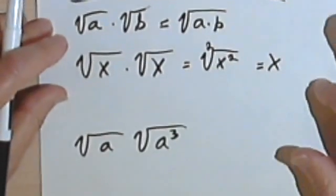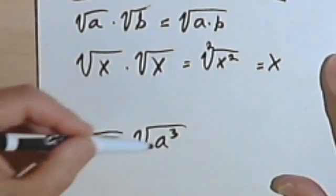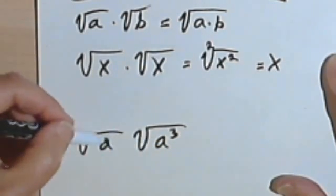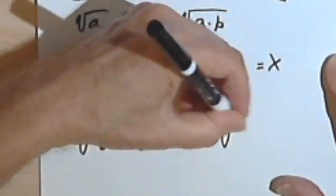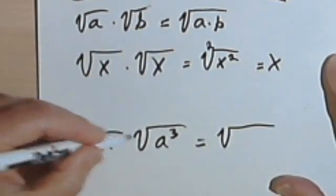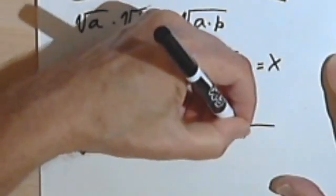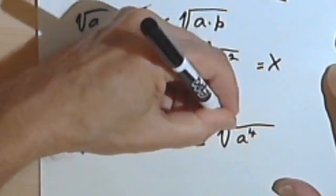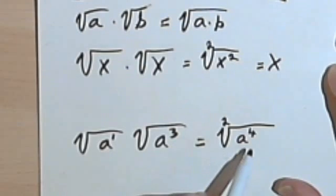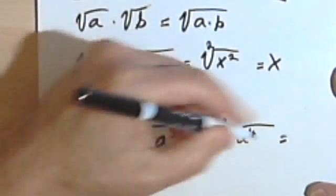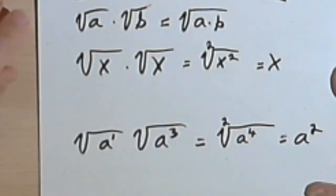Let's look at another problem. I've got the square root of a times the square root of a to the third, and I'm going to multiply these two square roots together. That gives me the square root of a times a to the third — basically adding their exponents — so that gives me a to the fourth. To simplify, I take the index, which is 2, divide it into the exponent under the radical sign, and that gives me 2. So the simplification is just a squared.